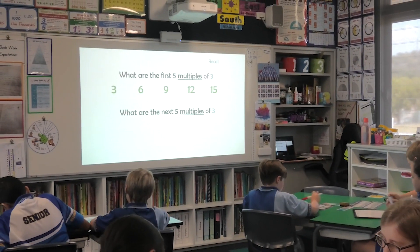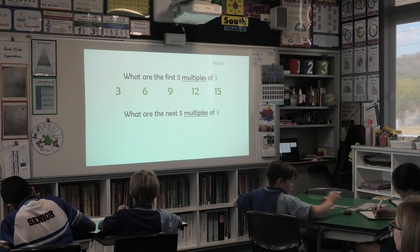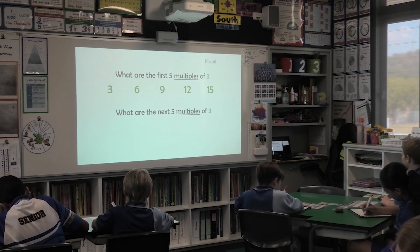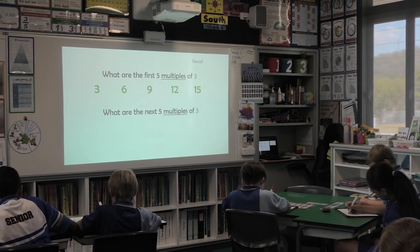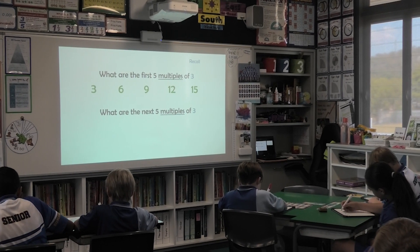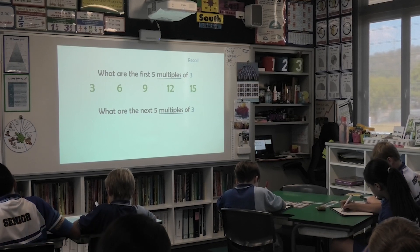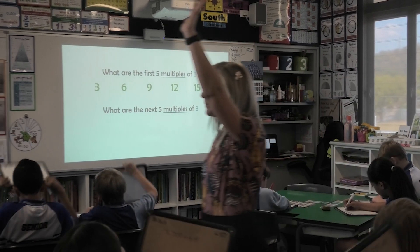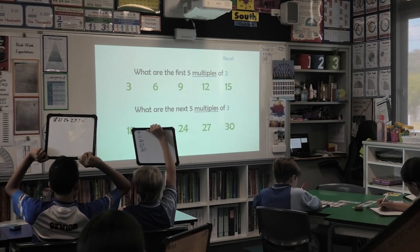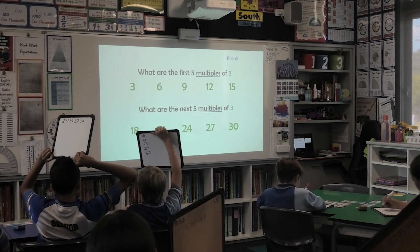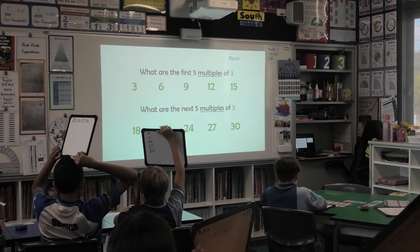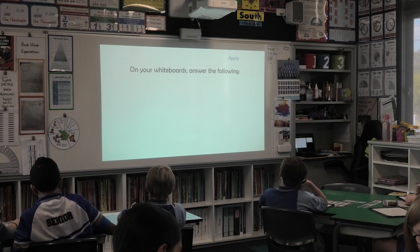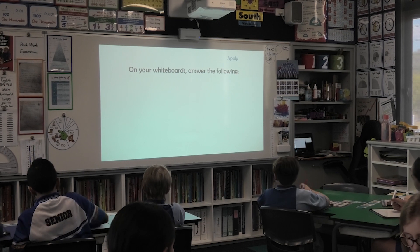Excellent. Clean your boards off. What are the next five multiples of three? Multiplication charts if you have one. 5, 4, 3, 2, 1. Boards up. Let's record them together. Let's go. 18, 21, 24, 27, 30. Fantastic. Clean off your boards.